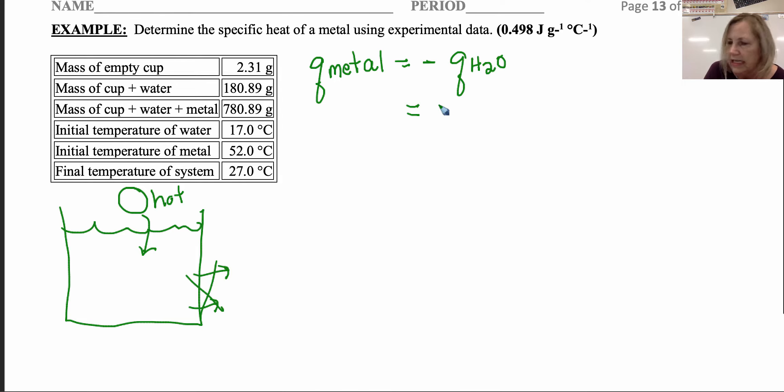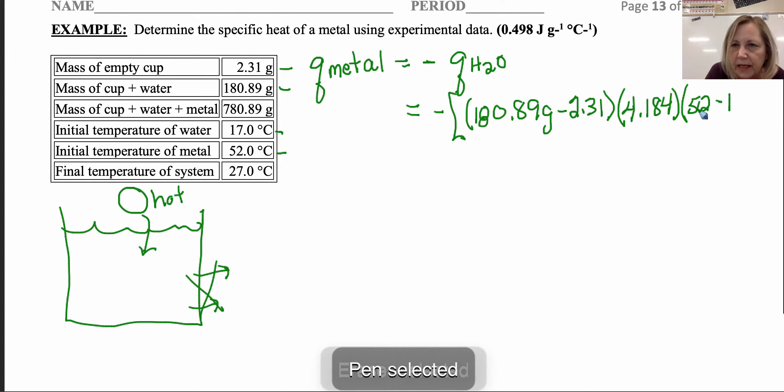My water mass I have to get from my experimental data. I've got to subtract the cup, so 180.89 grams minus the cup. Heat capacity of water is 4.184; we saw that in the previous question. Now let's look at my water. My final temperature of my water is 52. My initial temperature of my water is 17. Whoops, I messed that up. Sorry about that.